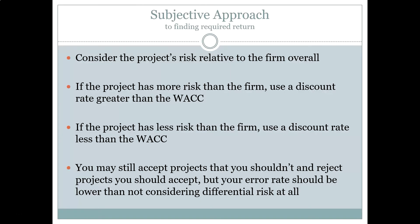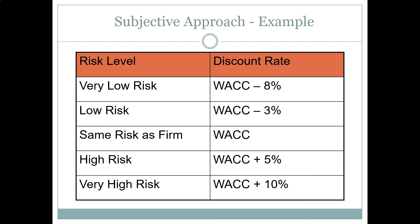The second-best option is called the subjective approach — we try to subjectively estimate the project's risk. We know that the average risk for GE is right in the middle, that light bulb risks are going to be less than average, and nuclear submarine project risks are going to be greater than average. The subjective approach says we recognize that these projects are more or less risky than the average, and we take WACC as our base. If the project has the same risk as the firm, we use WACC as the required return.